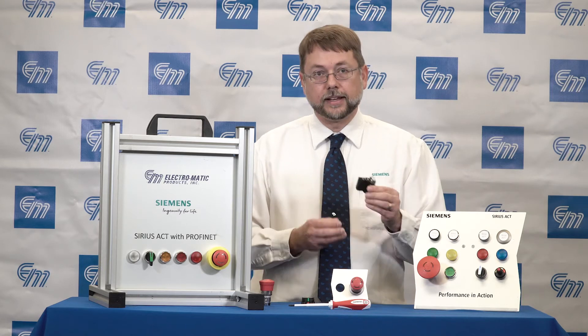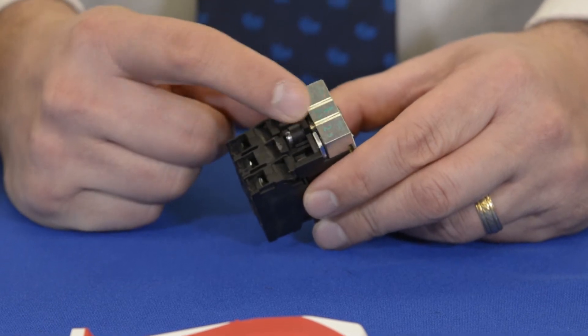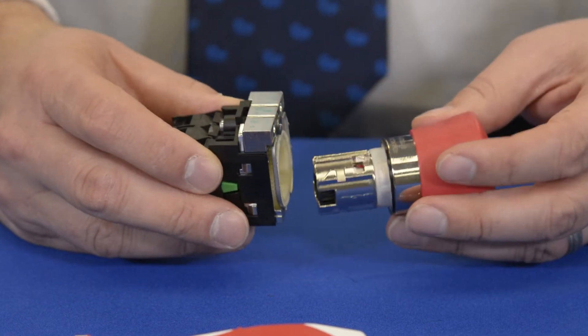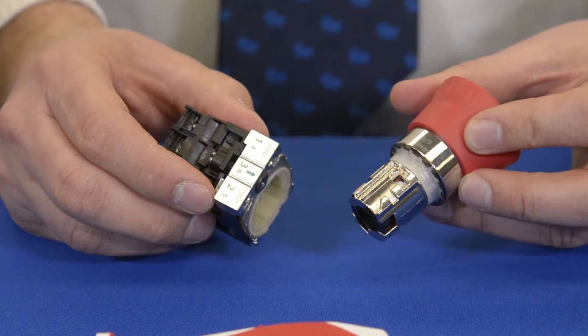The first thing I want to show you is it's very simple to add contact blocks to the back of the latch mechanism. As you can see, the Siemens latch mechanism has an arrow here which is used to guide the operator and the device together very easily when we mount this in a panel.